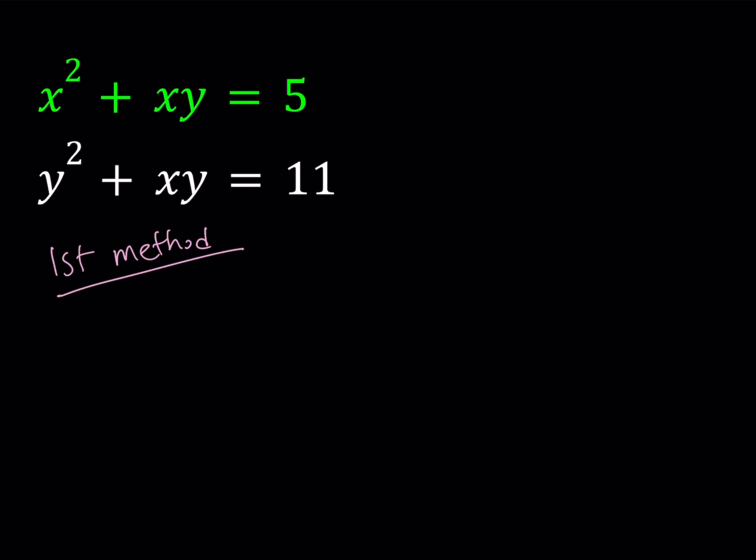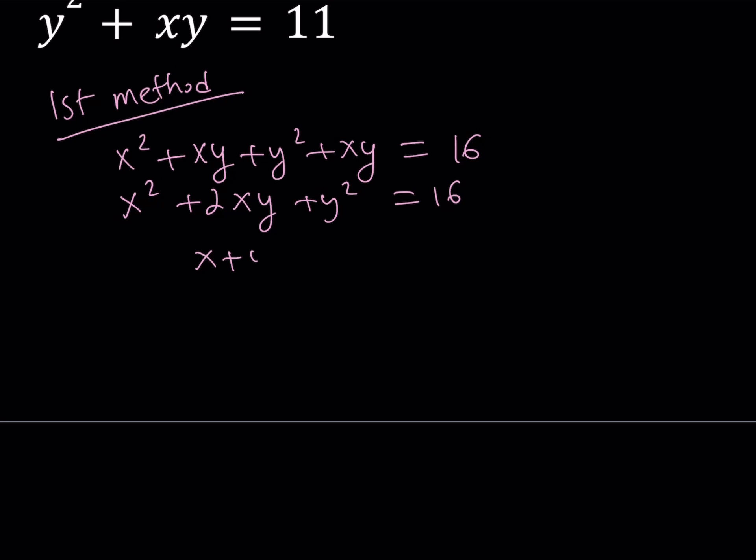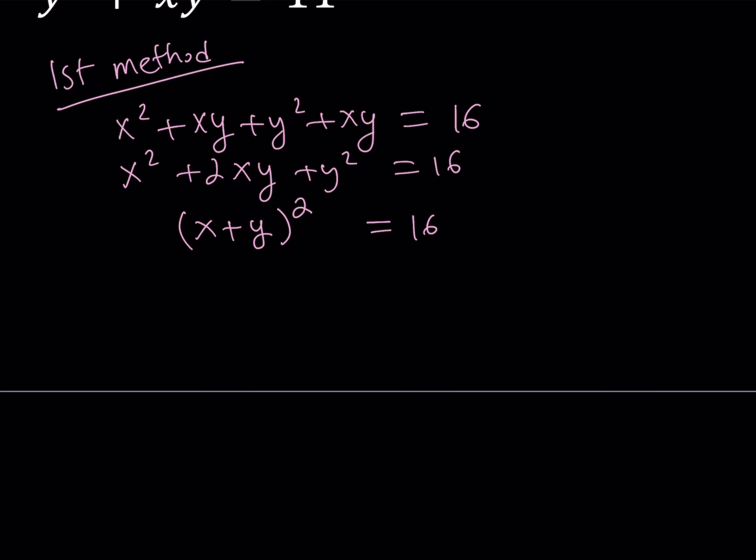For my first method, I'm going to go ahead and add these two equations up. x² + xy and y² + xy added together will make 16. From here I get x² + 2xy + y² = 16. And this means we have (x + y)² = 16. If you're looking for real solutions, then we have two possibilities here. Either x + y = 4 or x + y = -4.